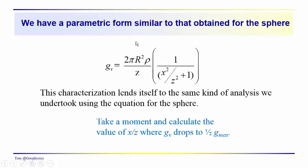So, maximum value, shape term, and so obviously we can conduct this same kind of analysis that we did with the sphere, and I left you with the question here, at what point X over Z along the profile would G_v equal one-half G_max? Well, that would be when this term is equal to one-half. So, if you want to test yourself, take a moment and come back to that question if you already haven't done it, and figure out what the value of X over Z is where G_v drops to one-half G_max.